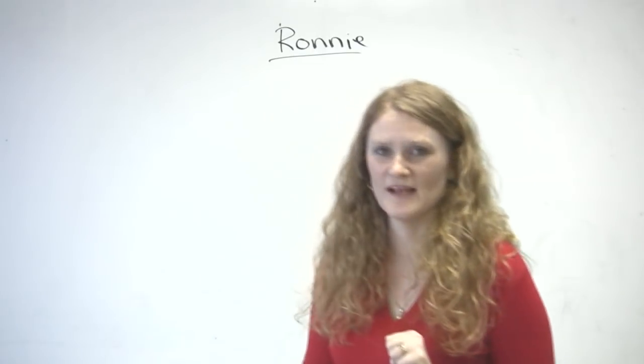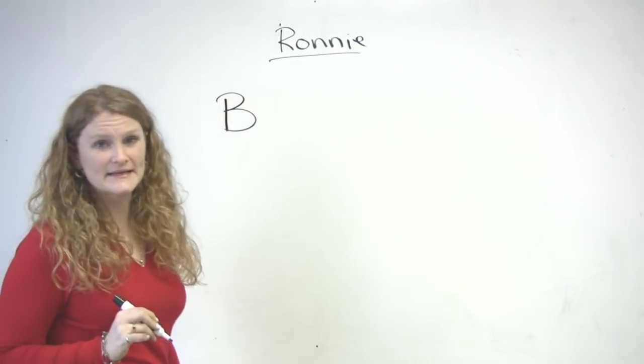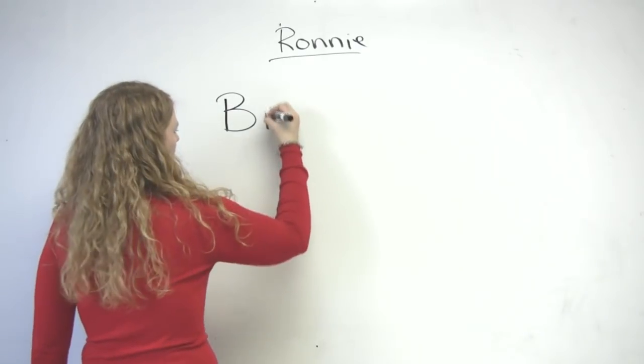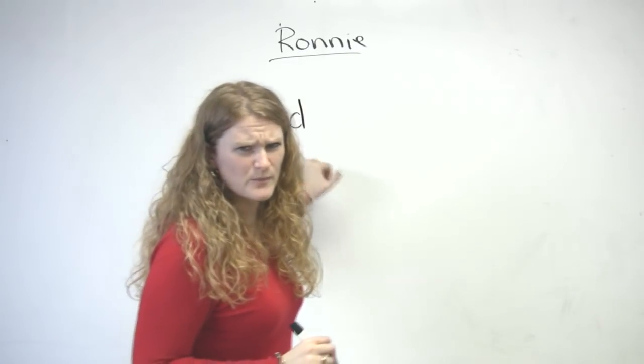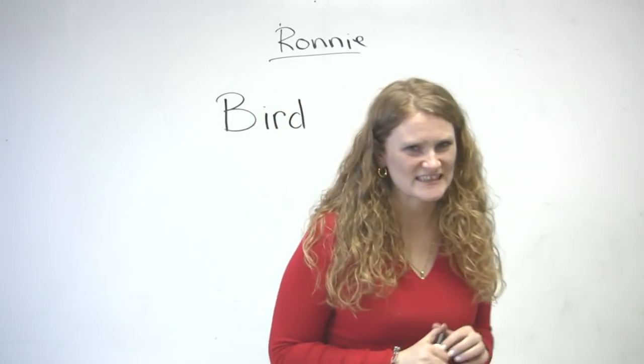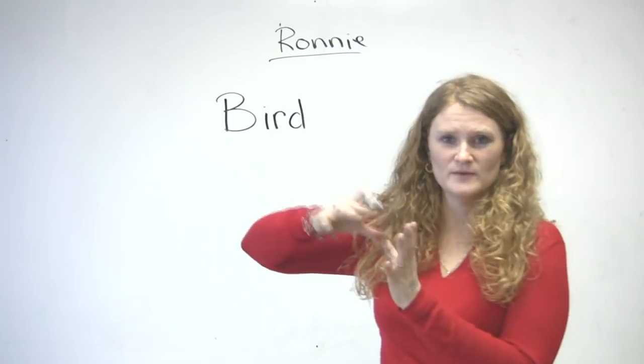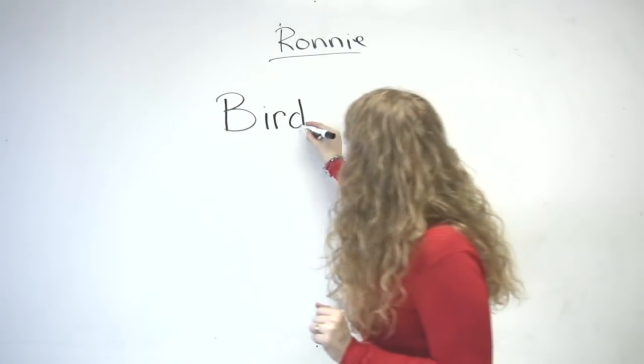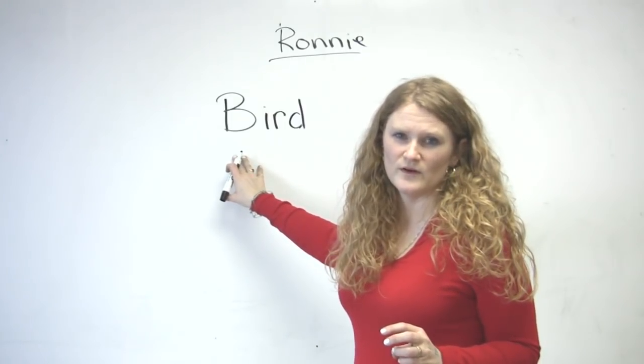They all begin with the letter B. And the first word is bird. Does anyone know what a bird is? It's not like a chicken. It is a chicken. A bird is a small animal or a large animal that flies around. So, when we say this word, we go bird.